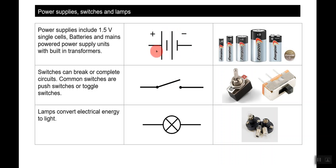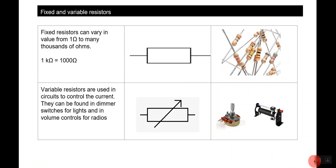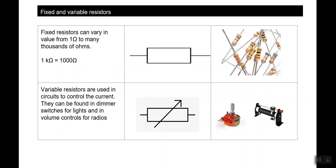These are resistors — a fixed resistor has a fixed resistance. Resistance is measured in ohms, and fixed resistors can vary in value from 1 ohm to many thousands of ohms — for example, 1 kilohm equals one thousand ohms. Resistors slow down the flow of current through the circuit.